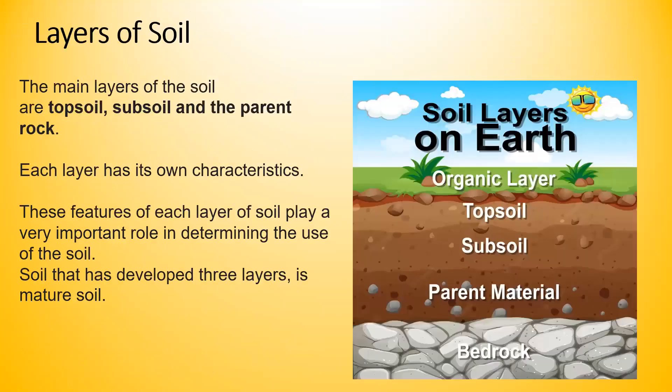What are the different layers of the soil? There are different layers of soil under the ground. The main layers of the soil are topsoil, subsoil and the parent rock. Each layer has its own characteristics, and these features play a very important role in determining the use of the soil. Soil which has developed at least three layers is called mature soil.